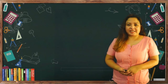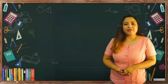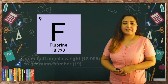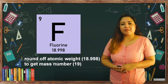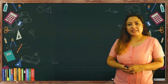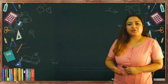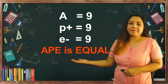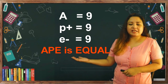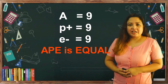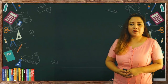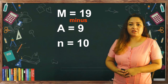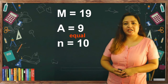Let us have an example. Let us have fluorine. Fluorine with symbol F has an atomic number of 9 and a mass number of 19. Following APEN mnemonics, the number of protons and electrons must also be 9 because the atomic number is 9 and A, P, and E have to be equal. For the number of neutrons, we have mass number 19 minus atomic number 9, which gives us 10. This is your neutron number.